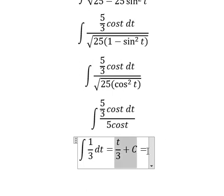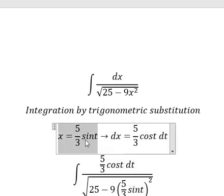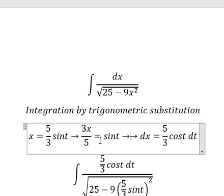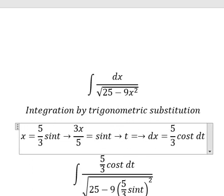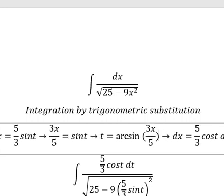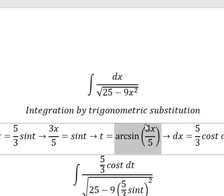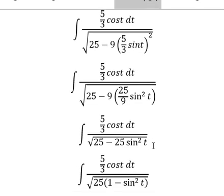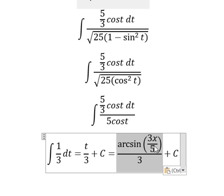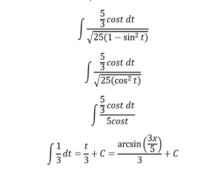For t, that is this one, so we need to divide both sides by 5/3. And now we can get t equals arcsin of 3x/5, so I will put this one to change for t. And this is the final answer. This is the end, thank you for watching.